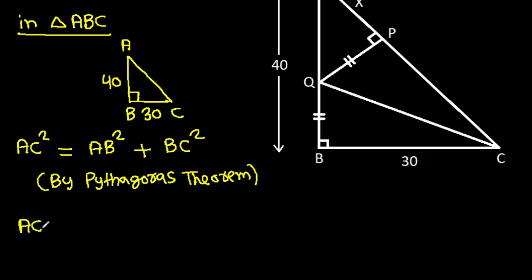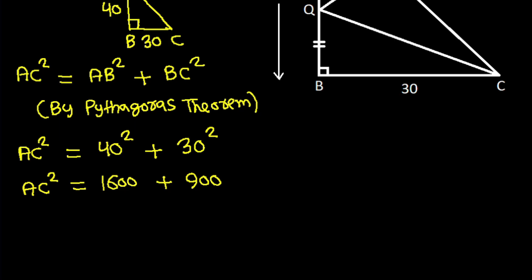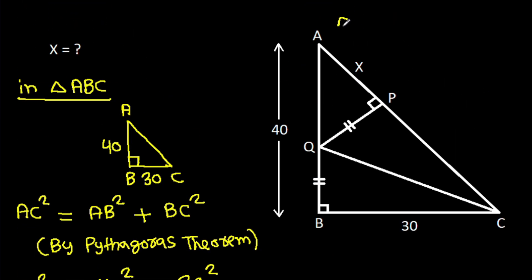And AC squared, it is AB — that is 40 — squared, minus BC is 30 squared. And AC squared is 1600 minus 900. And AC squared is 2500, that means AC it will be 50.